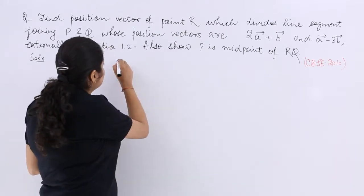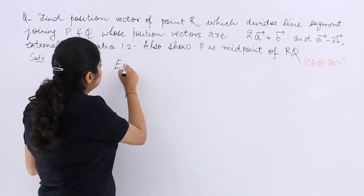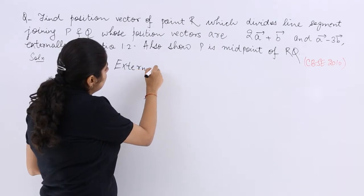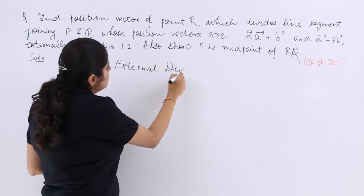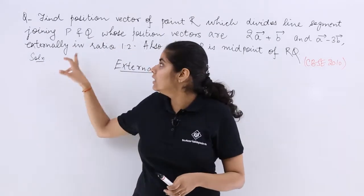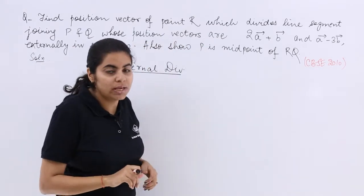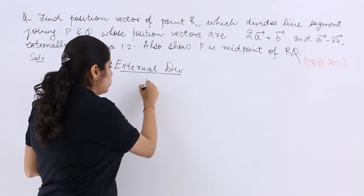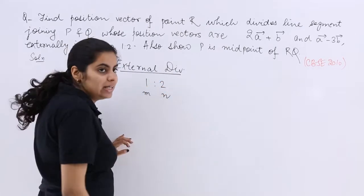Definitely let me use the formula for external division. External division I have to see because it has been given that externally the ratio is 1 is to 2. So 1 is to 2 is the ratio. So this is your M, this is your N.